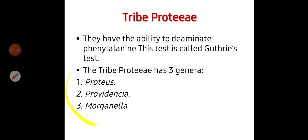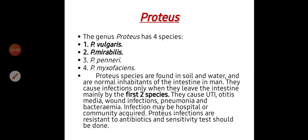Tribe Proteeae includes three genera: genus Proteus, genus Providencia, and genus Morganella. We will talk about them in detail in the second part of today's lecture. First is genus Proteus — it is the most important of Tribe Proteeae. Genus Proteus has four species, the most important two being Proteus vulgaris and Proteus mirabilis.